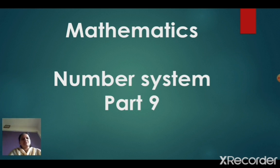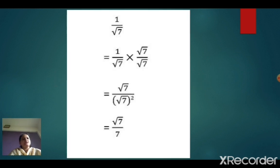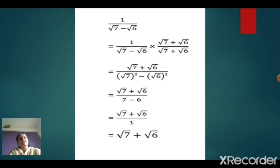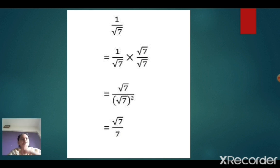Let us start with question number 5. They ask you to rationalize the denominator. Rationalizing the denominator means: in these questions, they will give you a sum where your denominator is an irrational number.